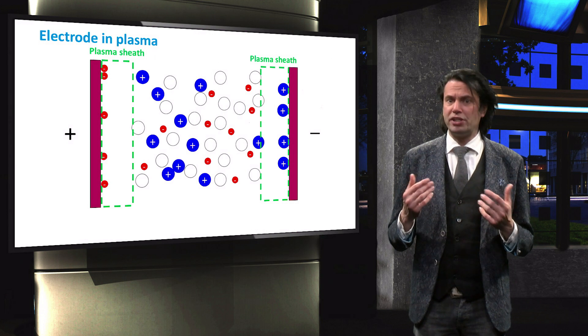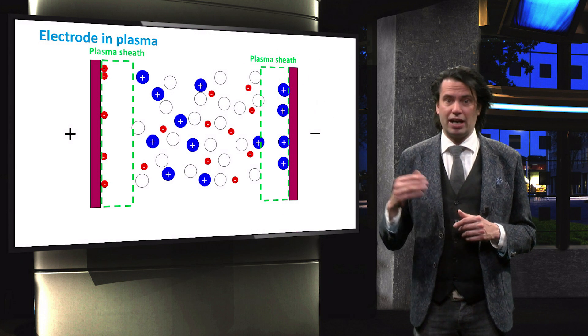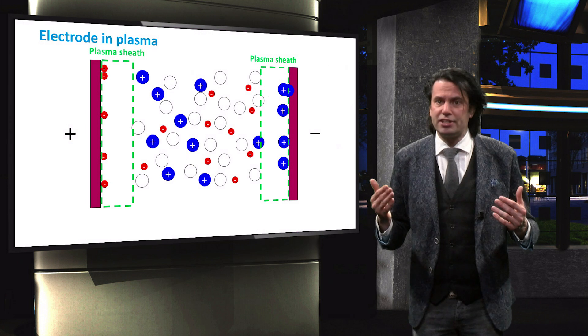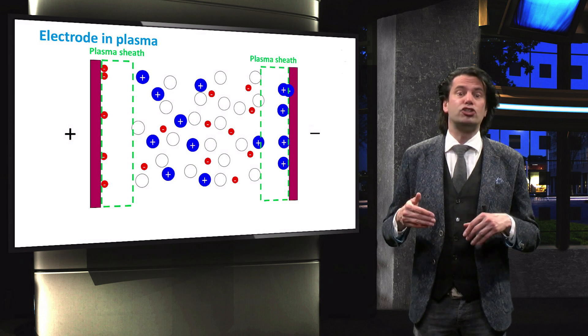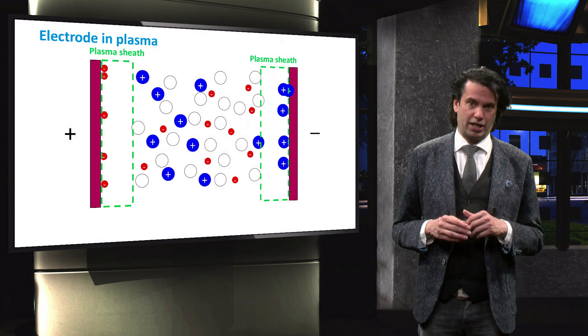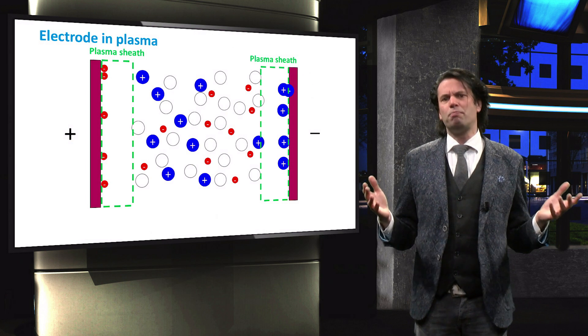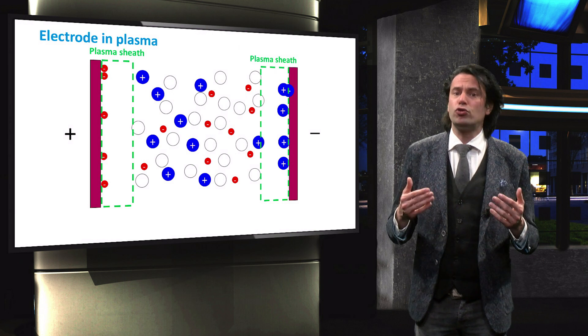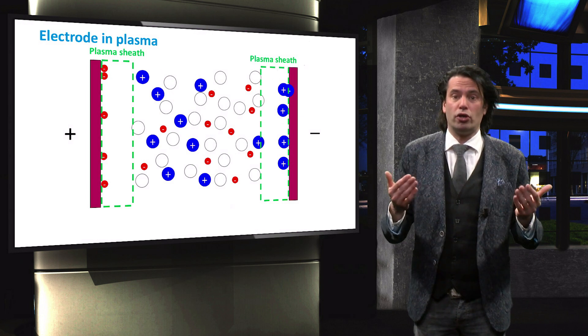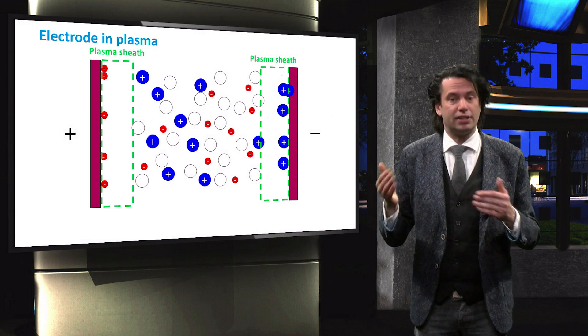If the electrons reach the sheath region at the positive electrode, they will be accelerated towards the electrode surface. Similarly, the ions are accelerated in the sheath region near the negative electrode. Since the random motion of the electrons occurs much faster, the electron flow towards the positive electrode will occur and stop much faster than the ion flow.